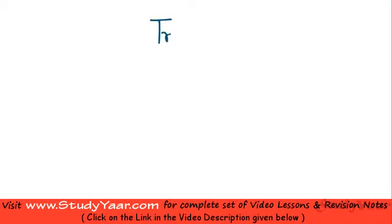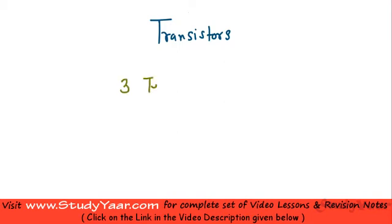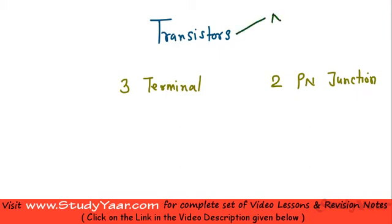In this lesson, we are going to talk about transistors. You already must be knowing about it — we are going to revise and learn new concepts. So what is a transistor? A transistor is basically a three terminal device which contains two PN junctions. Your transistor is of two types: you either have a NPN transistor or a PNP transistor.